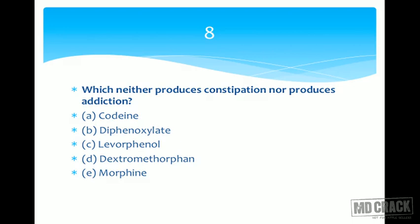We want a drug that does not produce constipation or addiction. Morphine has both, so it is removed. Codeine is similar to morphine and produces constipation and CNS depression. Diphenoxylate must cross the blood-brain barrier to produce its analgesic effect; it is an opioid, so it produces addiction on long-term use and constipation as well.